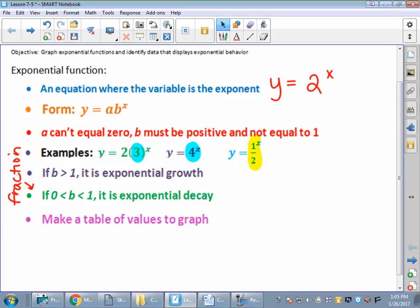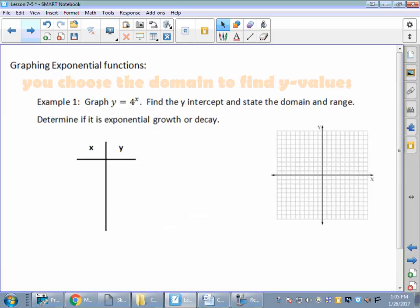And when we graph these guys, we are going to make a table of values. So let's do a graph. Graphing exponential functions. I wanted to make sure I put this down. You choose the domain. You're going to use those to find your y values. Now, everybody knows from first semester, domain is always which values. So you're going to choose the x's to find your y's. We're going to do this the old-fashioned way. We're going to put in an xy table and graph it. So example 1 says to graph y equals 4 to the x power. Find the y intercept. State the domain in range. Determine if it's exponential growth or decay. Let's graph it first. Then we can talk about those other things based on our graph.